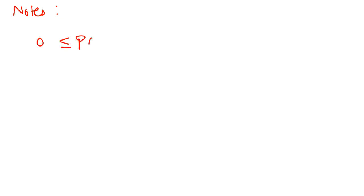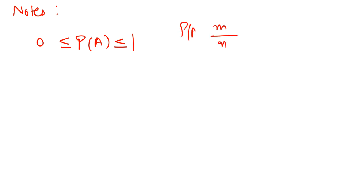This is our classical definition of probability. If we want to find P(A), simply compute m upon n — the number of outcomes favorable to A upon the total number of outcomes. Now for some notes: we can immediately say that the probability of A is greater than or equal to 0 and less than or equal to 1. This is because P(A) = m/n and m is always less than or equal to n.